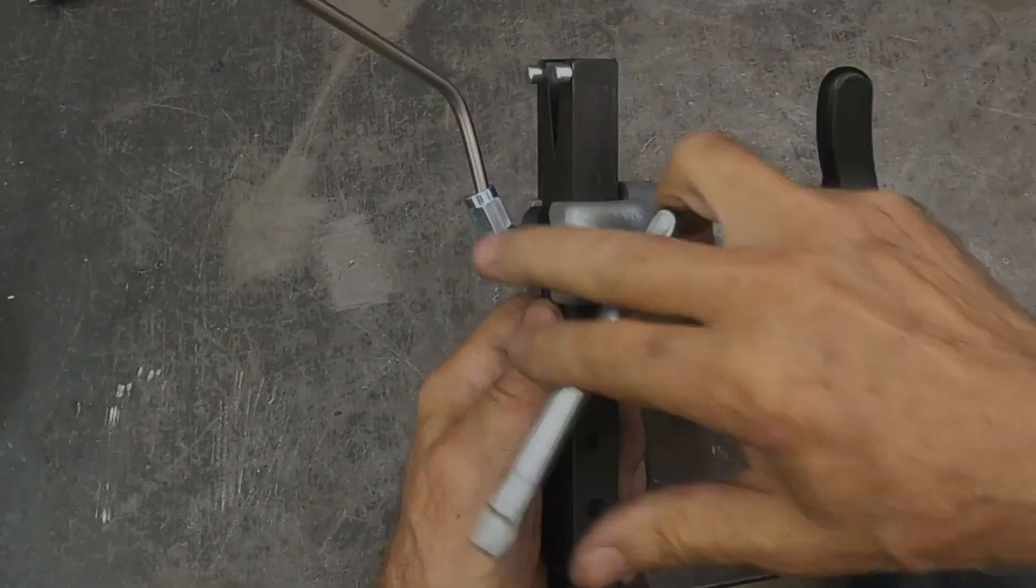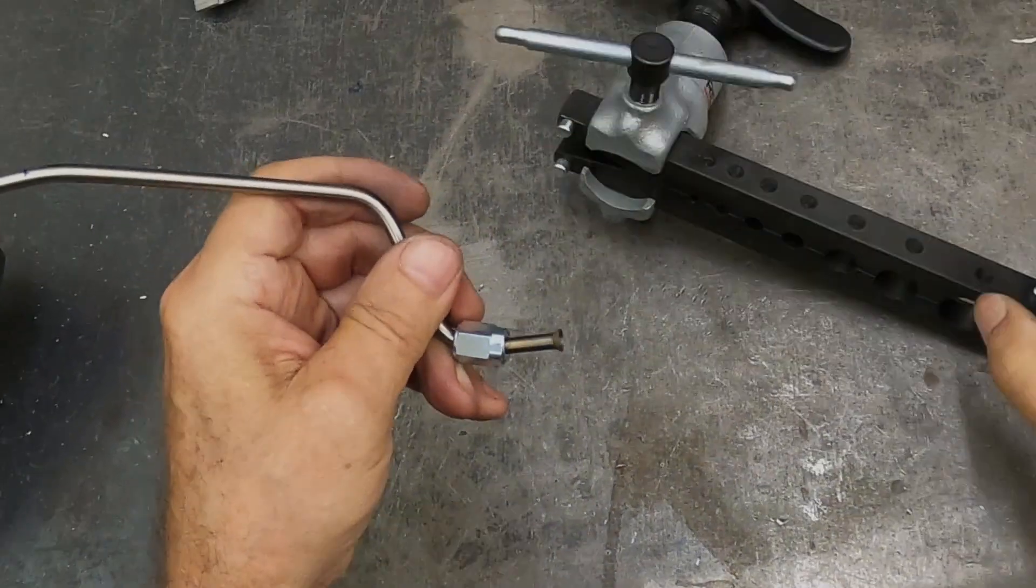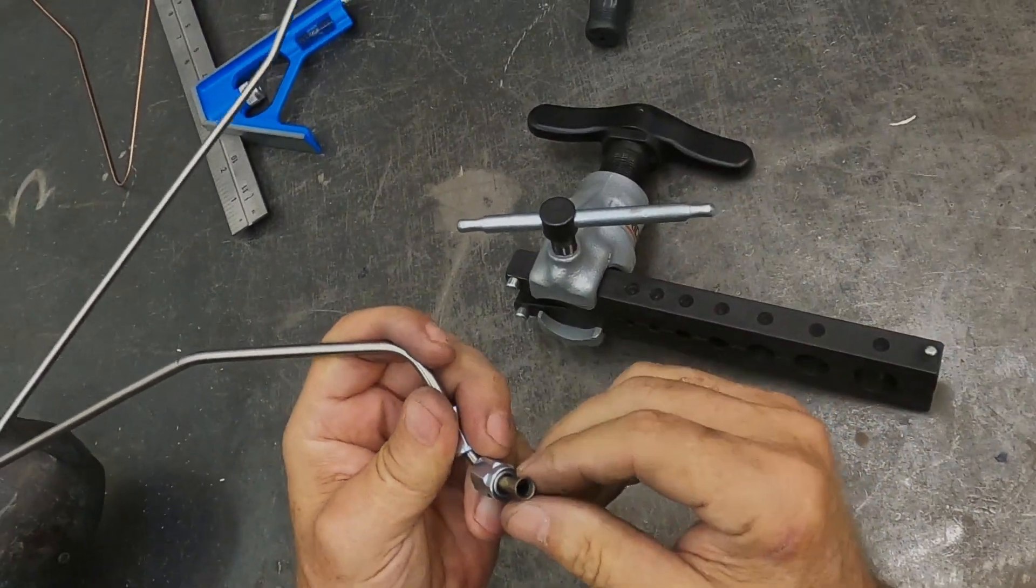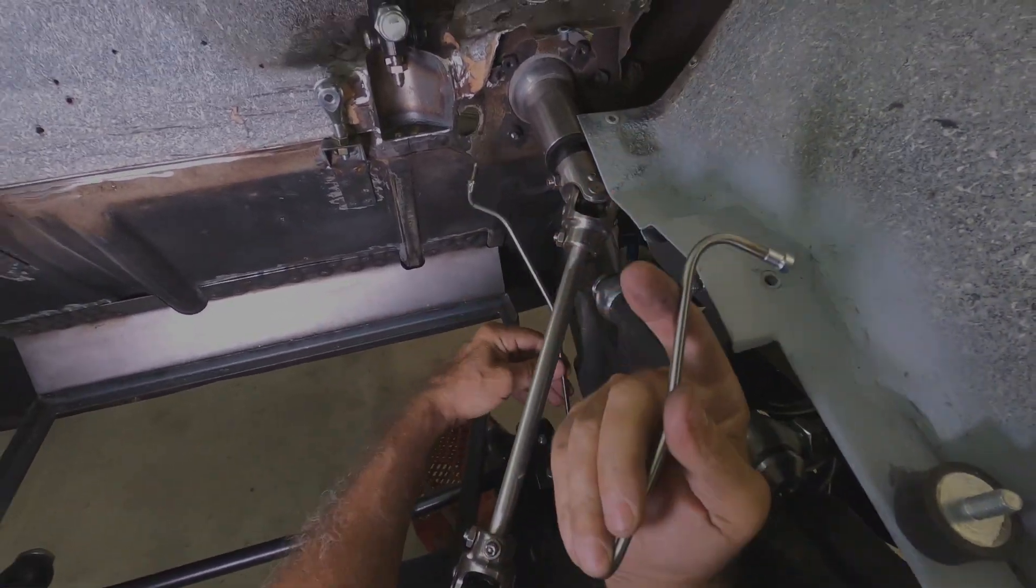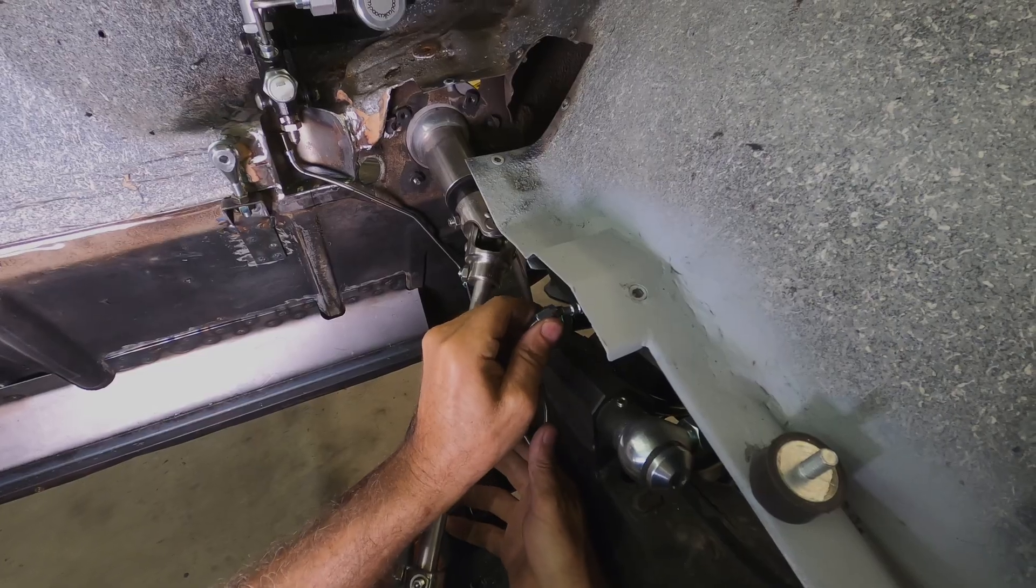For brake line hardware I use 3/16 or dash 3 stainless steel tubing. The fittings are always zinc plated steel, never aluminum. On rare occasions I'll use stainless fittings like if it's going into aluminum.